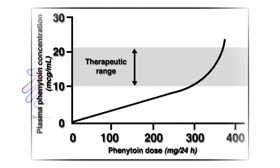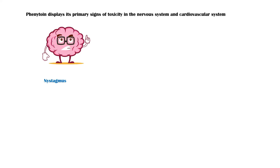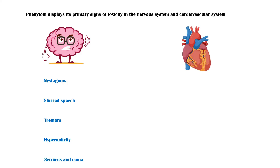Since phenytoin is a medication with a narrow therapeutic index, it is important to know the toxic effects of the drug. Phenytoin displays its primary signs of toxicity in the nervous system and cardiovascular system. Main central nervous system effects include nystagmus, slurred speech, tremors, hyperactivity, seizures, and coma. In the cardiovascular system, it can cause life-threatening arrhythmias, hypotension, and cardiovascular collapse.